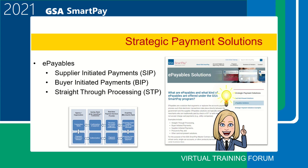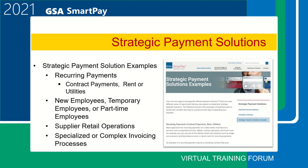ePayable solutions replace the accounts payable process such that electronic transactions take place directly between the government and the supplier. ePayables include supplier-initiated payments (SIP), buyer-initiated payments (BIP), and straight-through processing (STP). The website includes diagrams of how each type works and a short video to explain the process. Examples of when strategic payment solutions can be used include recurring payments, new or temporary employees, supplier retail operations, and specialized or complex invoicing processes.